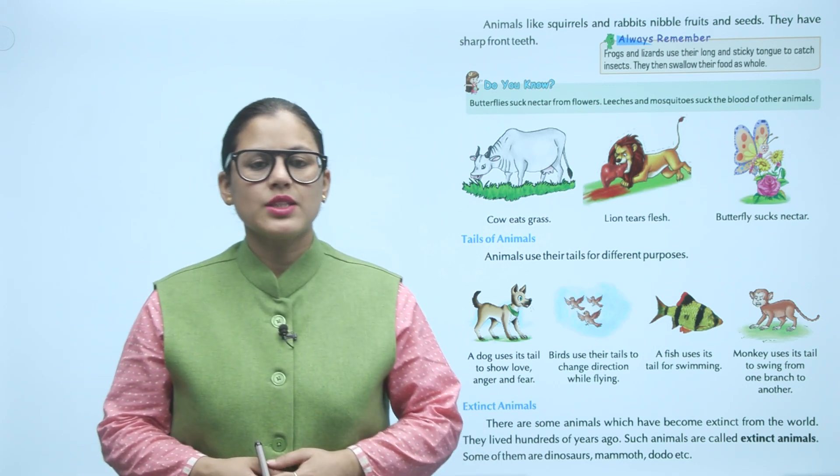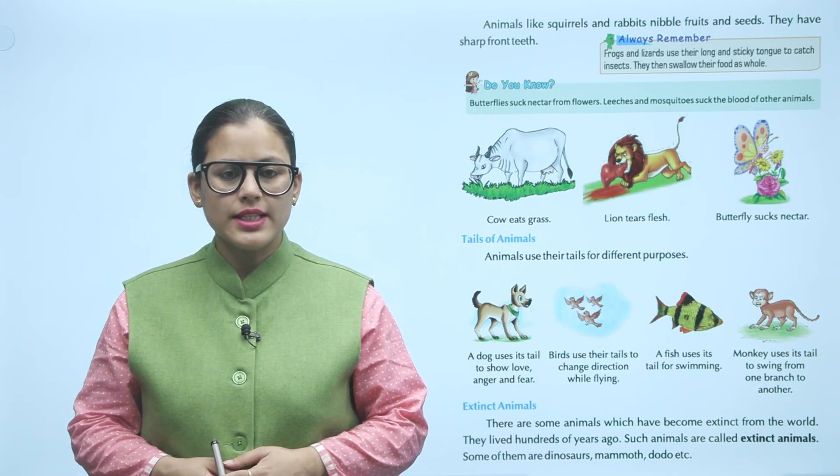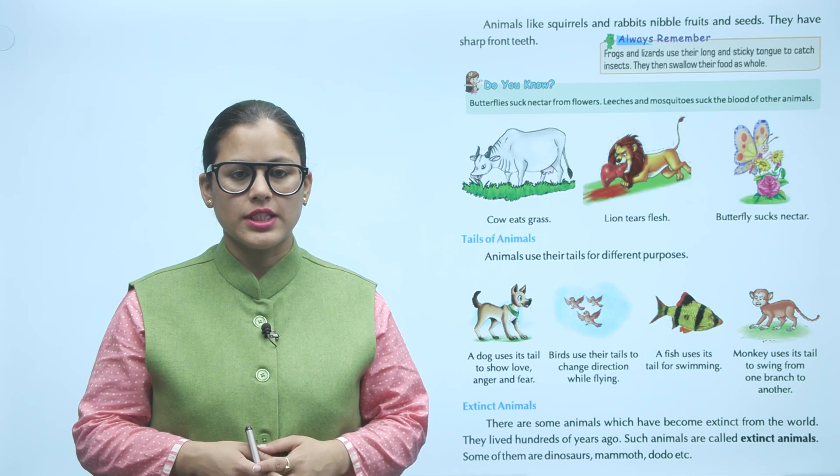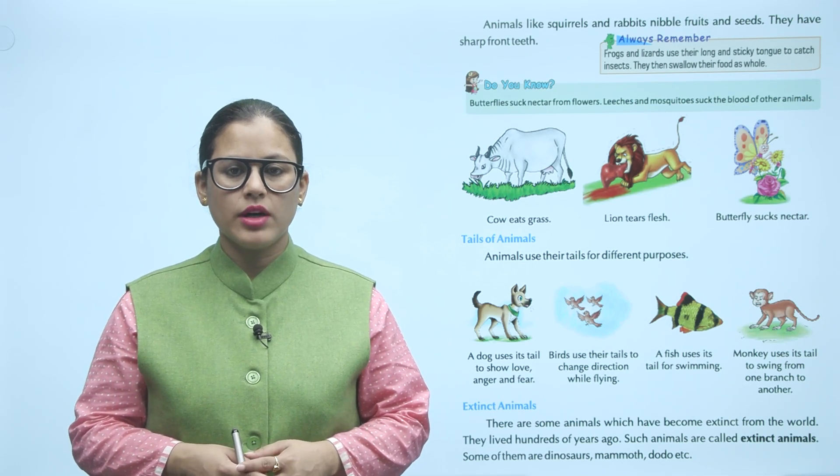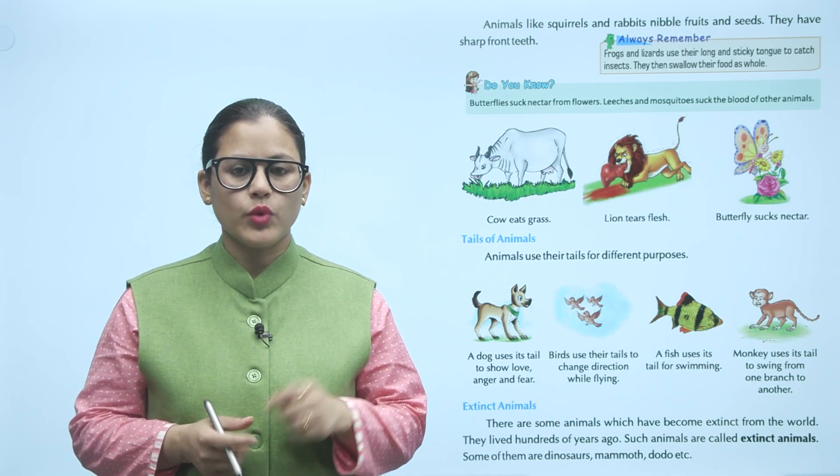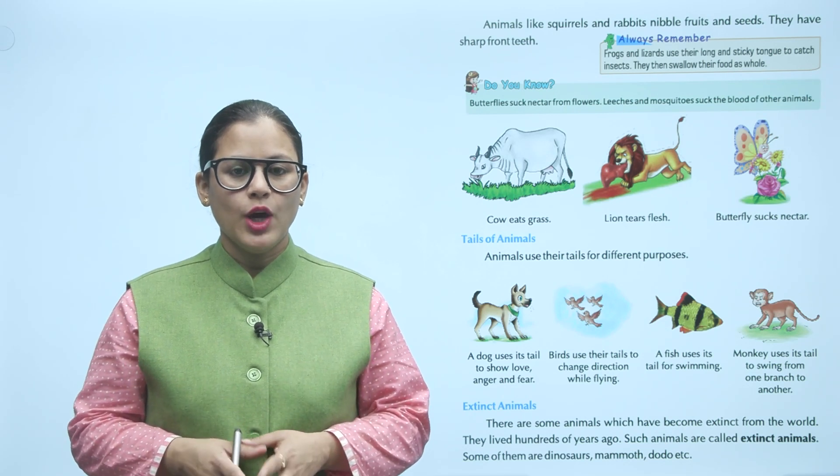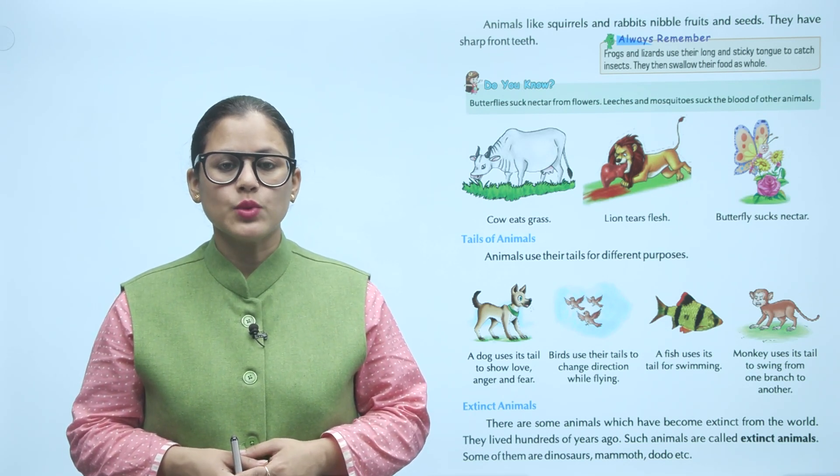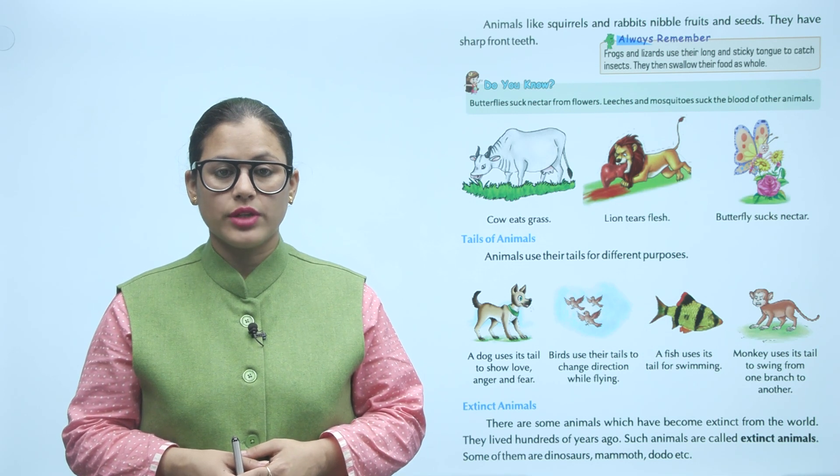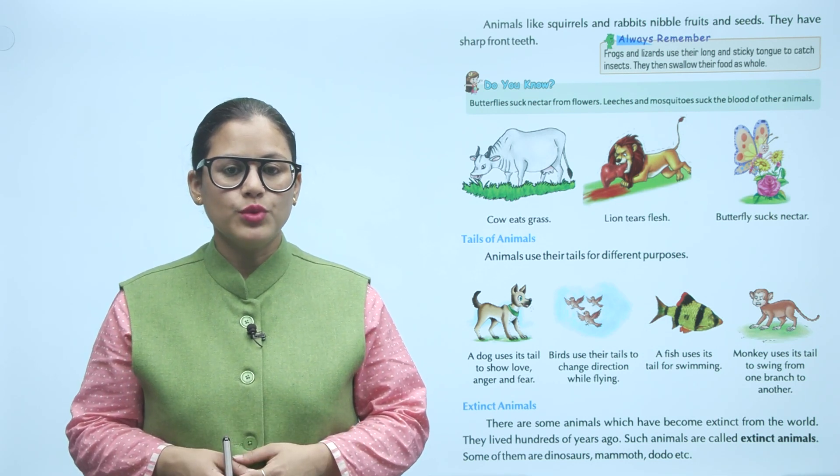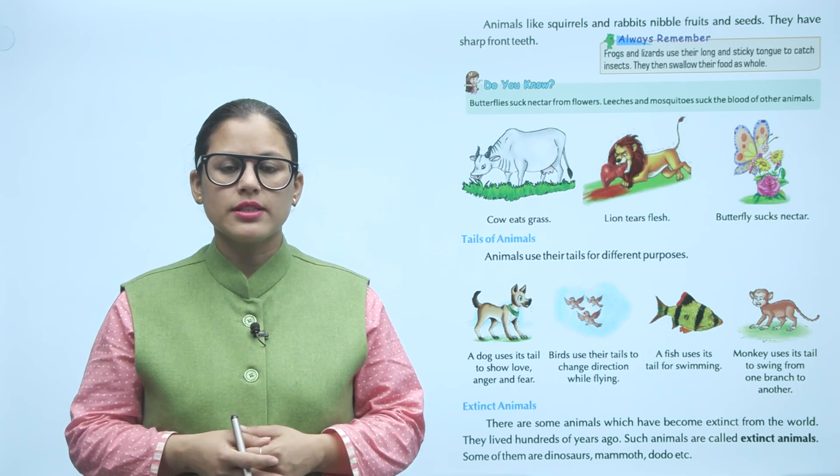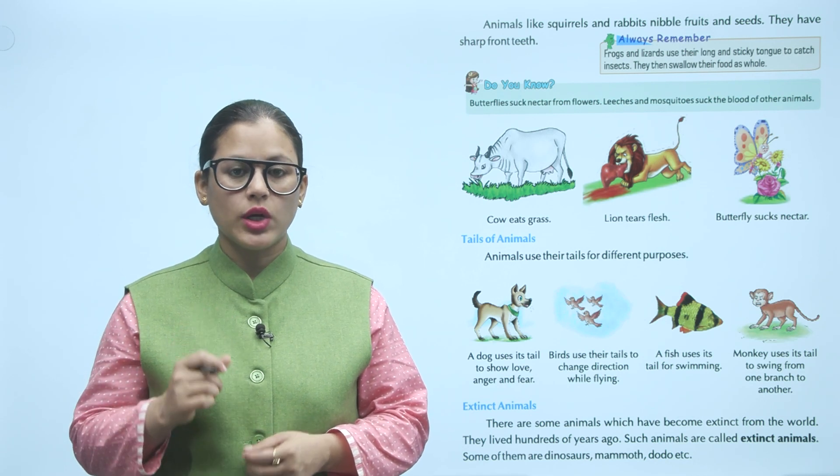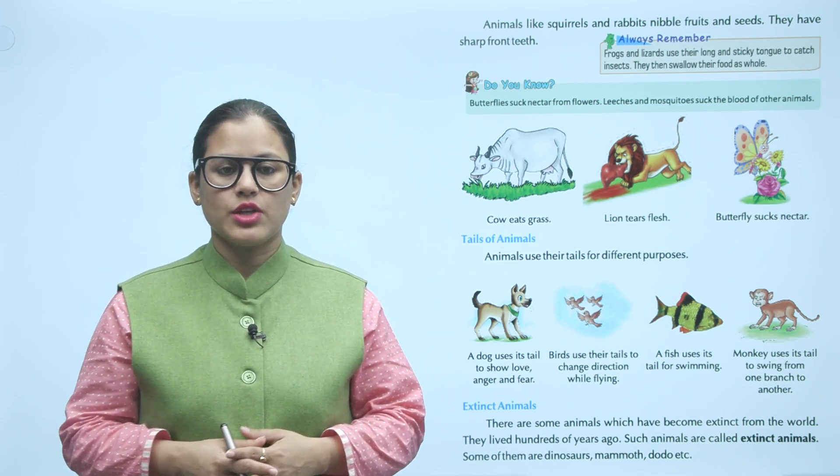Animals like squirrels and rabbits nibble fruits and seeds. They have sharp front teeth. Frogs and lizards use their long and sticky tongue to catch insects. They then swallow their food as whole.